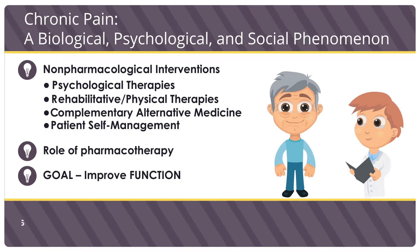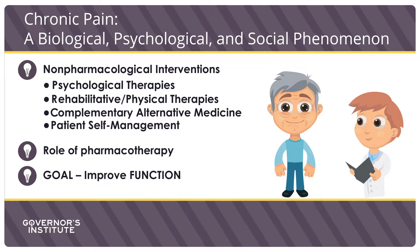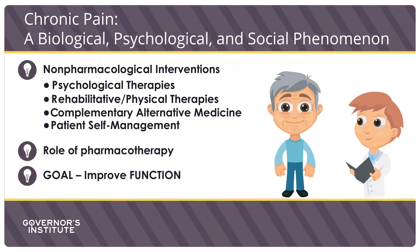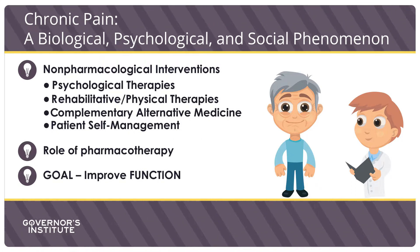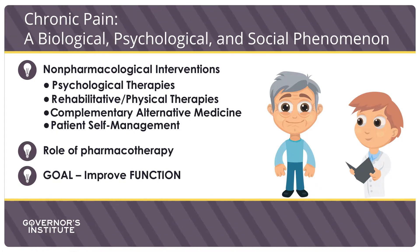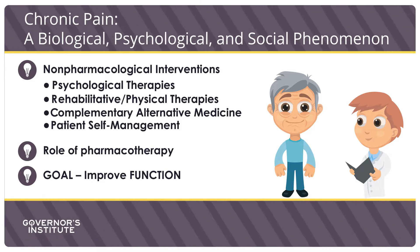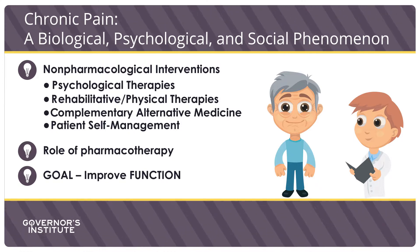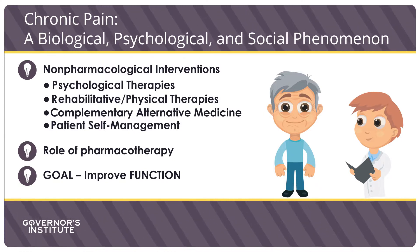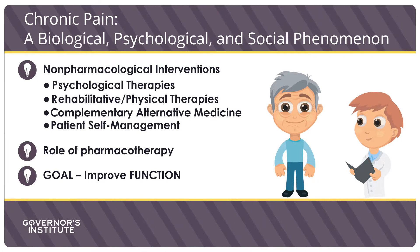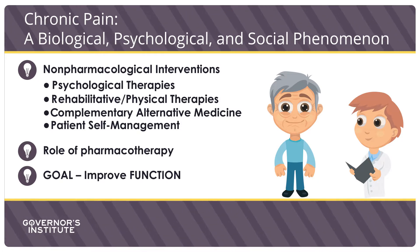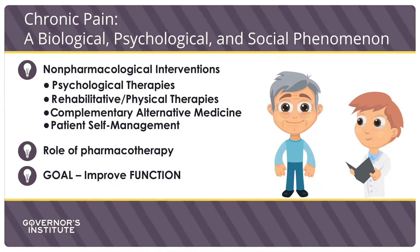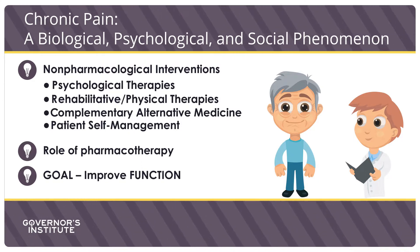Appropriate pain management starts with, and always includes, non-pharmacological treatments such as psychological therapies — including cognitive behavioral therapy, biofeedback, relaxation, and problem solving — as well as rehabilitative or physical therapies such as stretching and exercise, massage, traction, ultrasonography, gait and posture training, applied heat or cold, and TENS. Complementary alternative medicines such as yoga, guided imagery, and acupuncture, and patient self-management, which includes pacing of activity and planned rests.